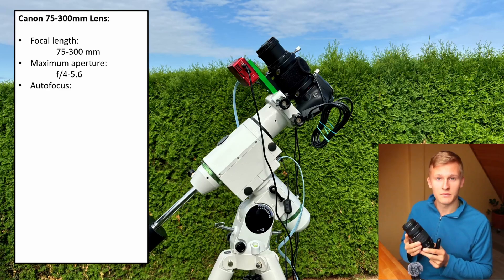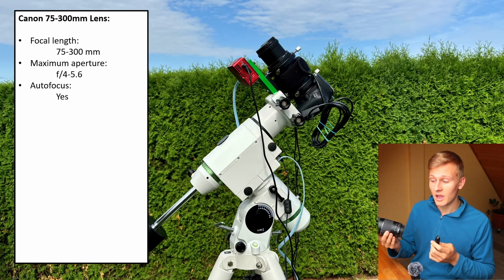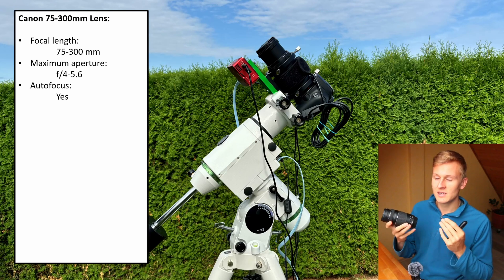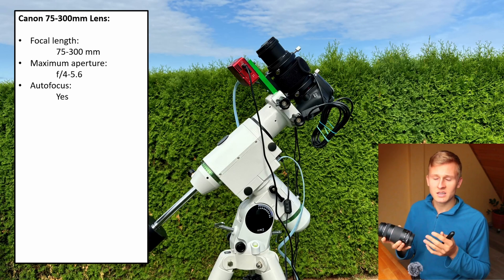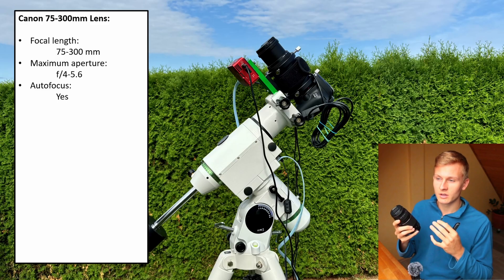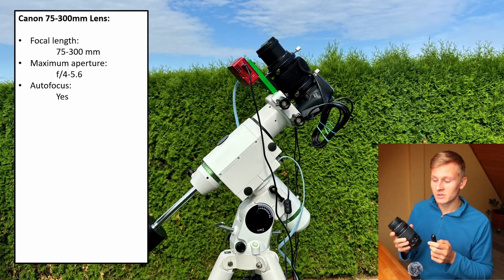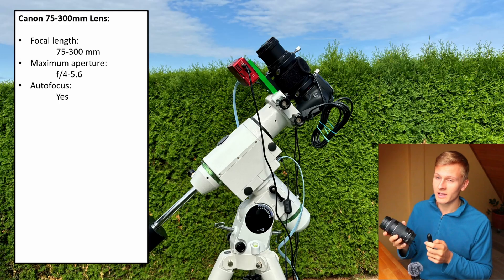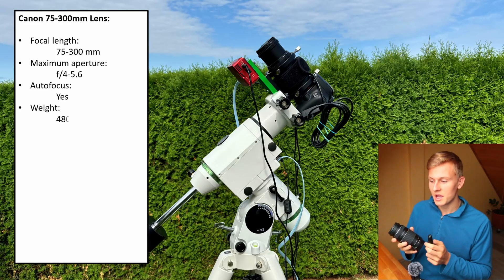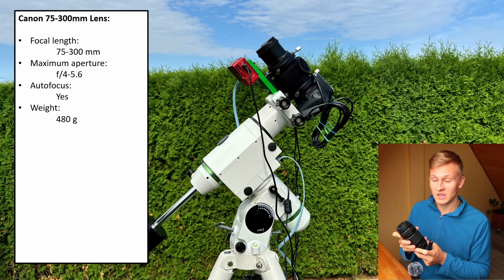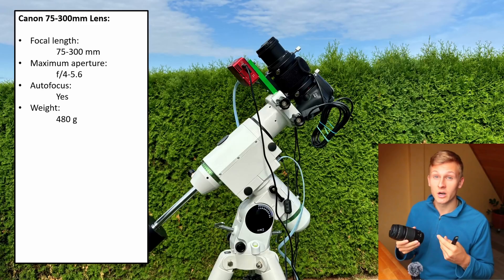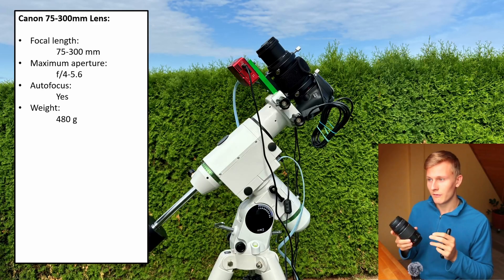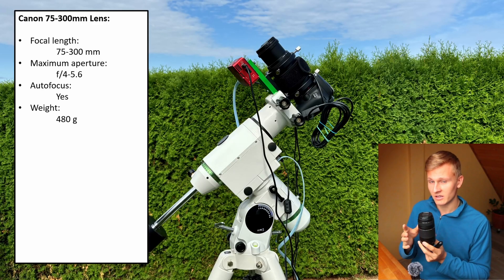This lens does have an autofocuser, but we usually don't need it in deep sky astrophotography. It can be useful for capturing images of the moon or in daylight. Something I really like about this lens is that it's not that heavy — around 480 grams — which is great because you can attach it to smaller star trackers such as the Skywatcher Star Adventure.